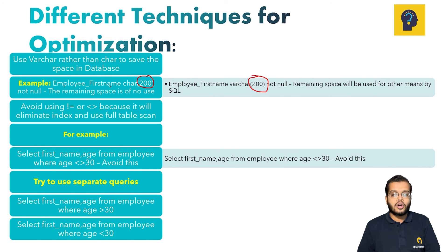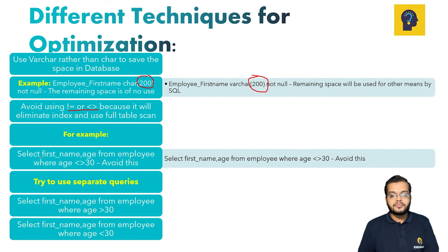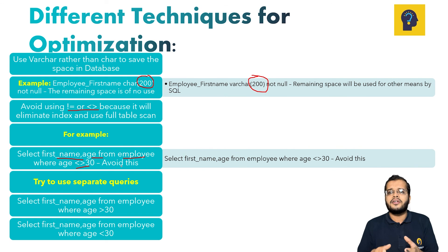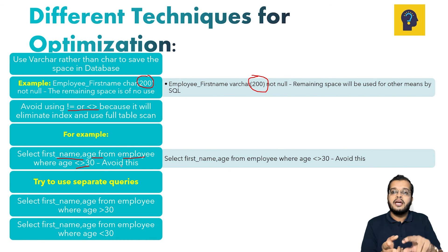Another technique: avoid using the not-equal-to operator (<> or !=) in a single query. For example, if you want to retrieve first name and age from an employee table where age is less than or greater than 30, instead of combining both conditions, write two separate queries — one for age less than 30 and one for age greater than 30. This avoids confusion for the SQL engine and improves performance.